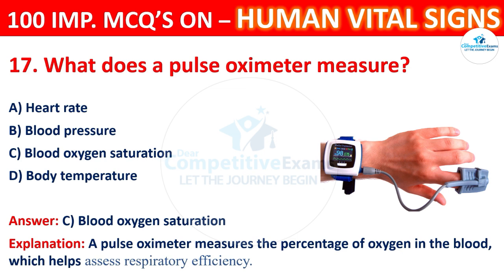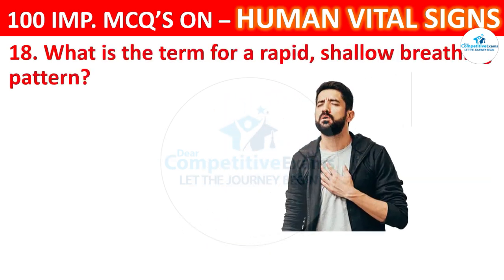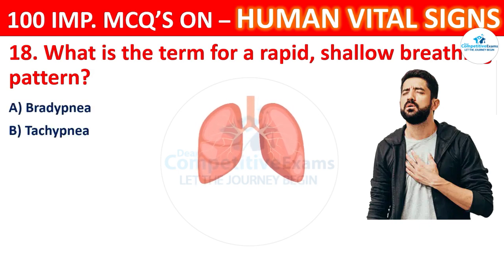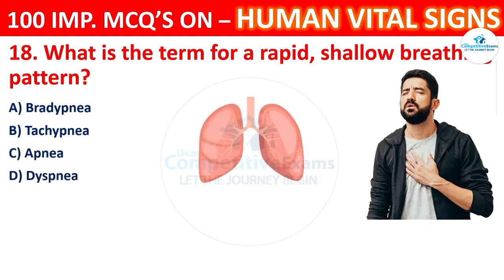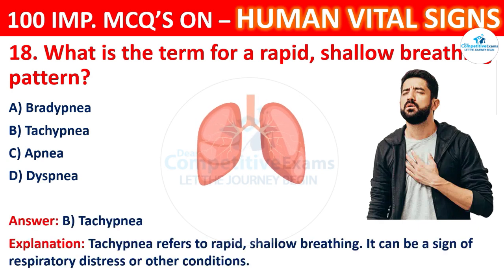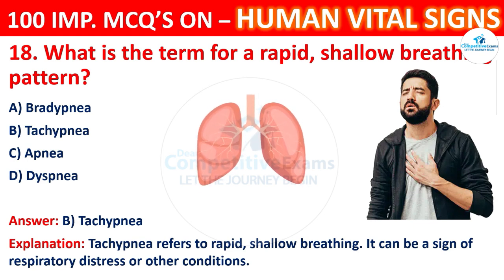Question 18: What is the term for a rapid shallow breathing pattern? Options: bradypnea, tachypnea, apnea, or dyspnea. The correct answer is B, tachypnea. Tachypnea refers to rapid shallow breathing. It can be a sign of respiratory distress or other conditions.